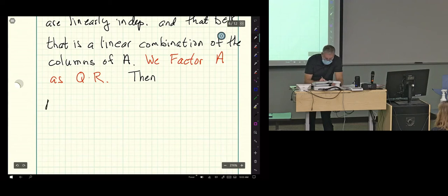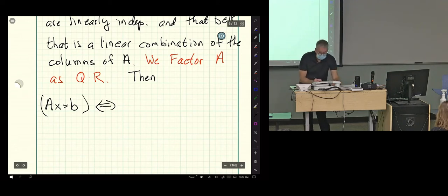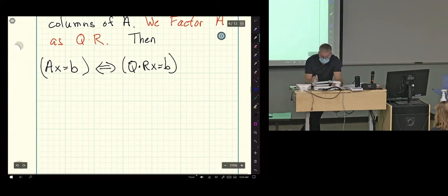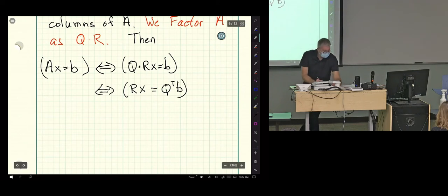We factor A as Q times R. So that's the QR factorization. If we factor A, then AX equals B if and only if QRX equals B. So, what do I do now? I multiply on the left by Q transpose to get an identity and I put my Q transpose here too. So, that's if and only if R times X equals Q transpose times B.